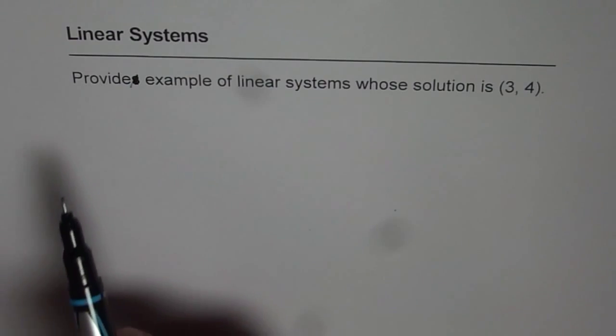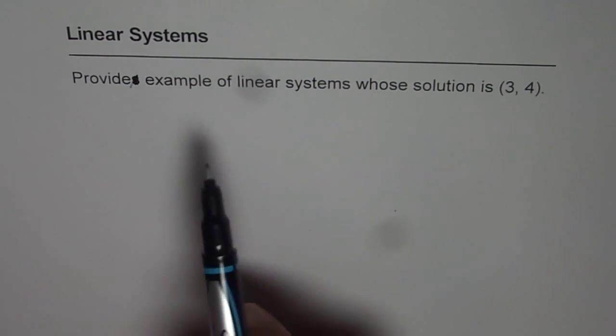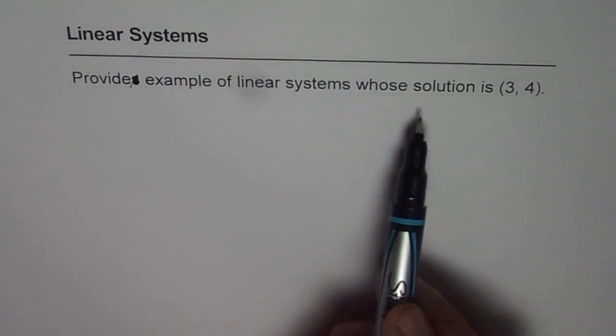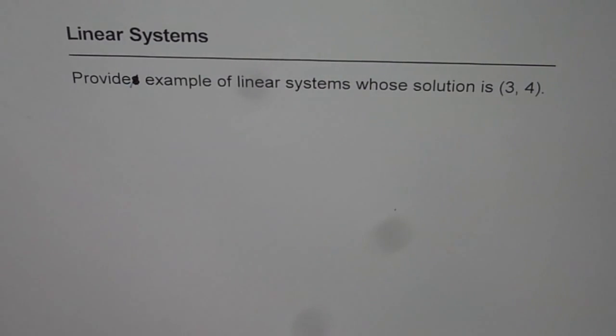The question is, provide example of linear systems whose solution is (3, 4). So the point (3, 4) is given to us as solution of a linear system. You have to write two equations, two linear equations, which will have this point in common.